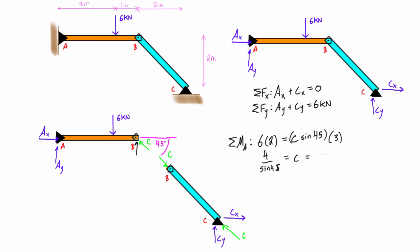Alright, so if we just rearrange that, you get 5.657 kilonewtons. So that's the actual magnitude of C, and it looks like we actually assumed the right direction, because we got a positive value.